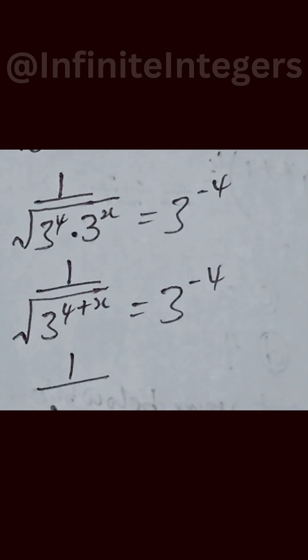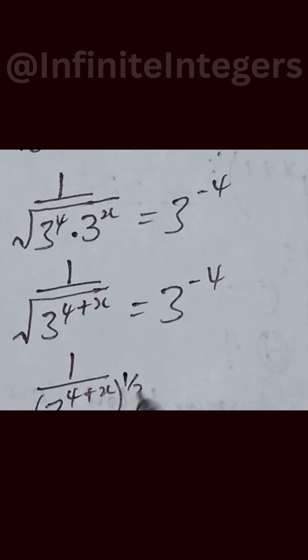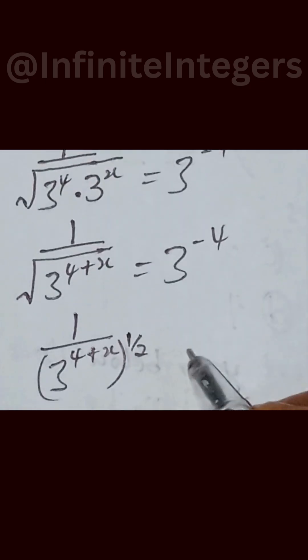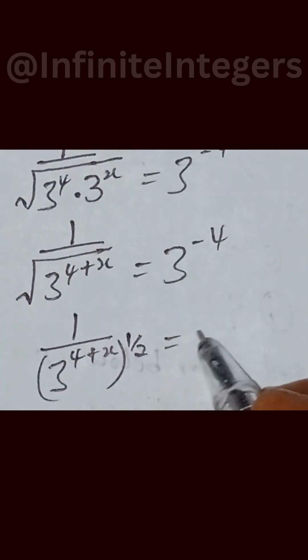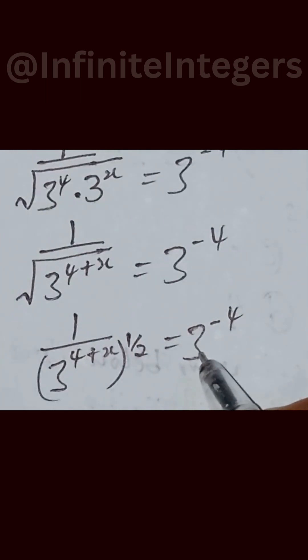We then rewrite this as 1 over 3 raised to power 4 plus x, in brackets, raised to power 1 over 2, and this will be equal to 3 raised to power minus 4.